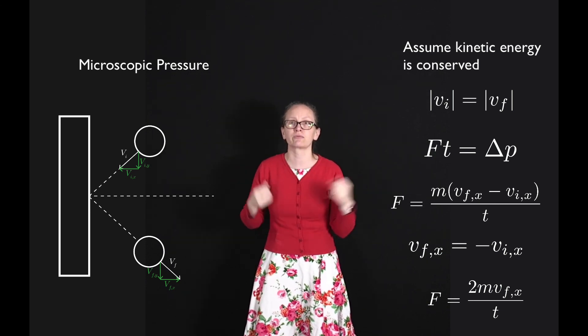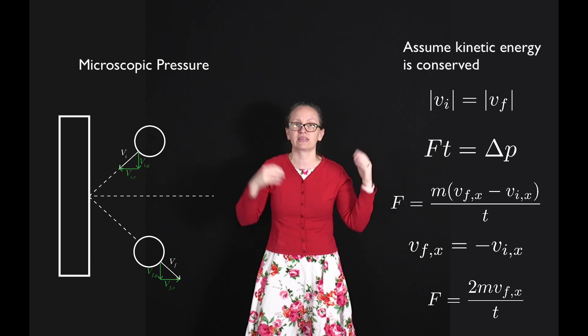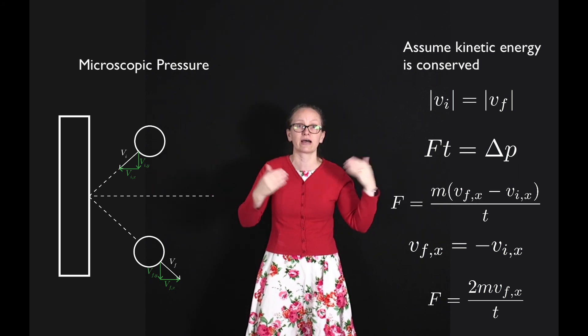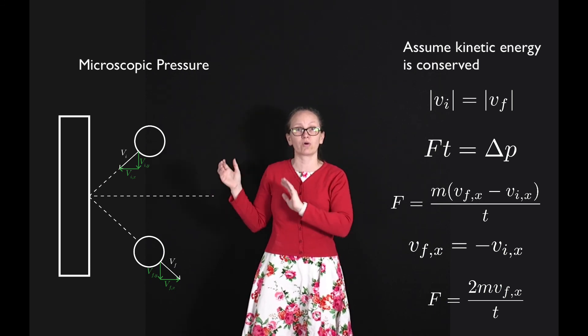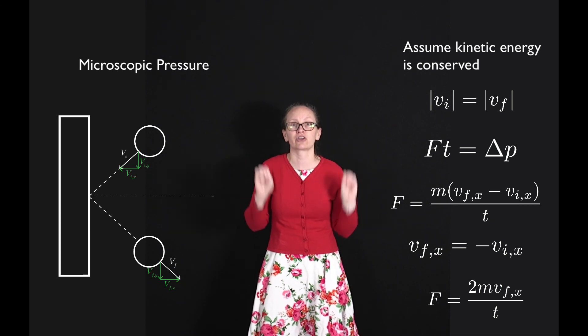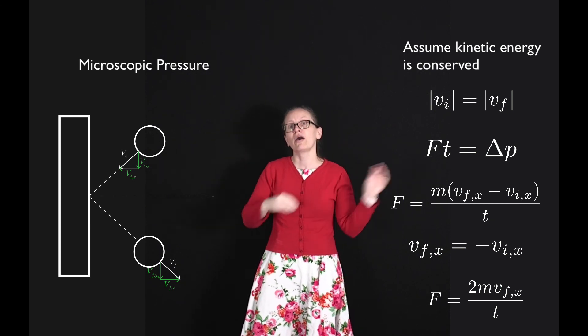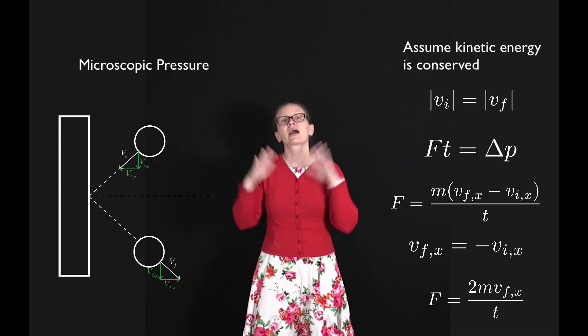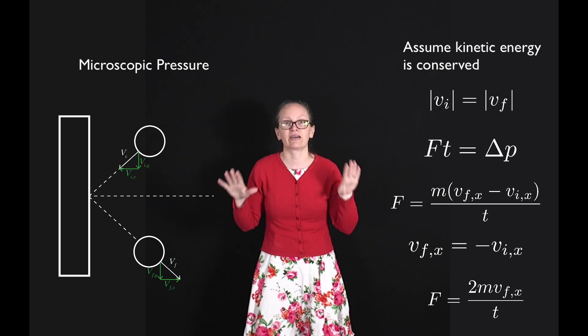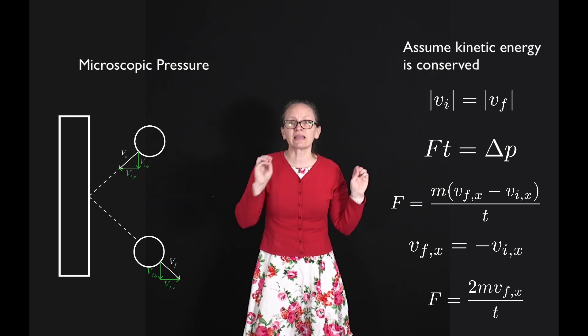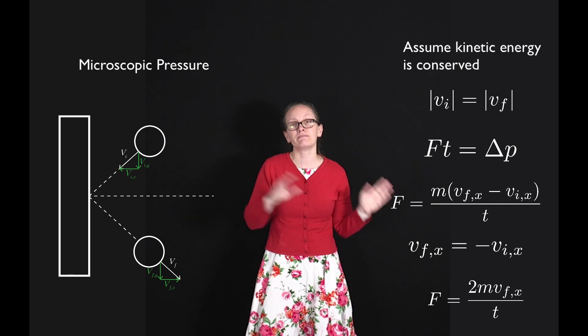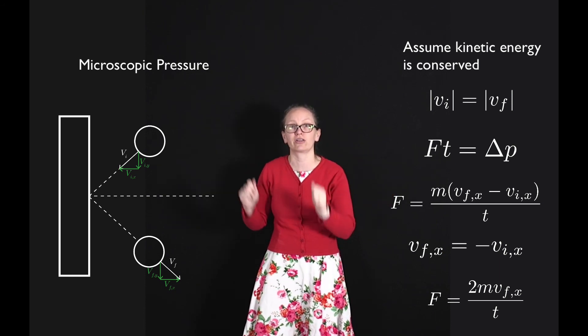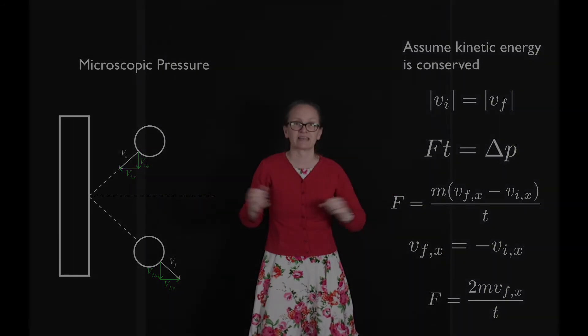So once we have the force, we can use it with the area and knowing the number of molecules which are colliding with the wall as well to calculate the total pressure on the wall microscopically. And we'll come back and look at this in more detail later. But for now, let's go and have a look at the macroscopic relationships between pressure, volume and temperature in the gas.